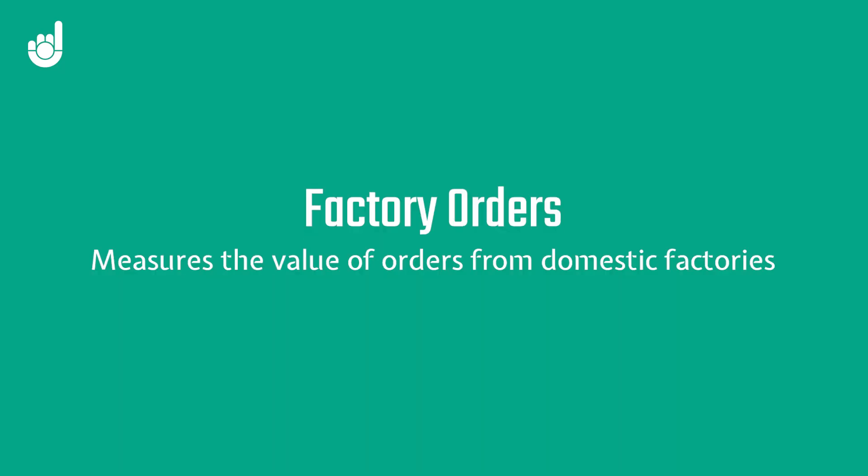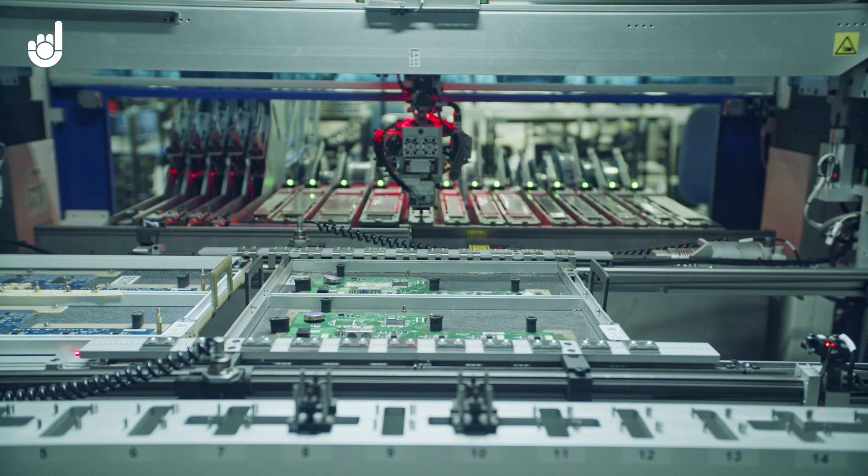Factory orders measures the total value of orders from domestic factories — those located within the US. The release comes about a week after the durable goods orders data, and because of that it doesn't really have the same impact in the markets. That's because durable goods are the juiciest part of the release, and that data usually would have already been priced in before factory orders are released.